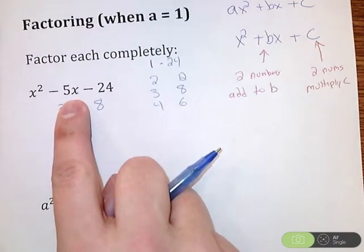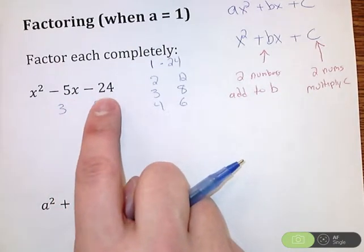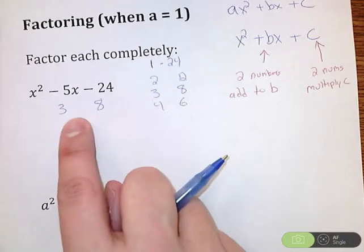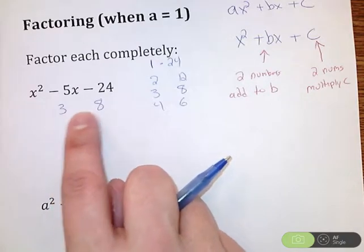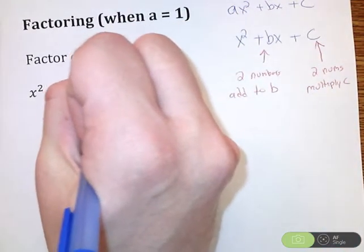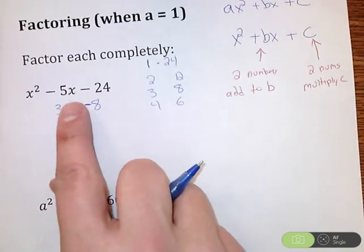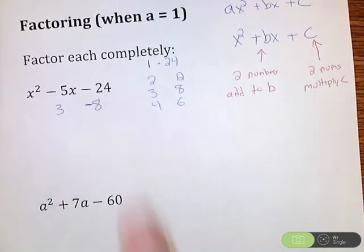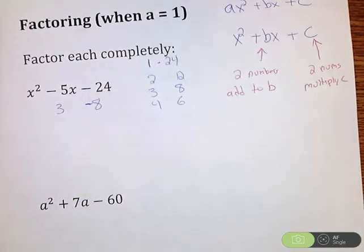So I need negative 5 there, and I need to multiply to get negative 24. So one's going to be positive and one's negative. If I had a positive 3 and a negative 8, 3 minus 8 is negative 5, and 3 times negative 8 is negative 24. So my two numbers are 3 and negative 8.